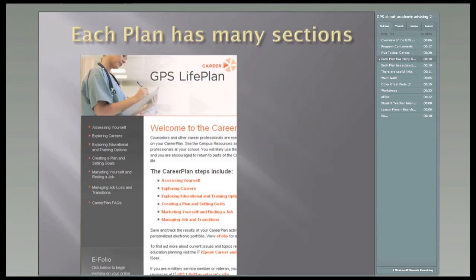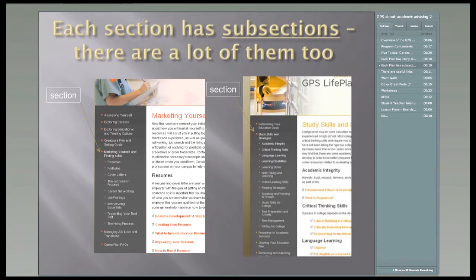Each of the GPS Life Plans is organized so users can click to easily open a section to find additional information on a particular topic. There are a lot of sections to explore, and because there is so much information, many sections have subsections. This makes it easy for users to find information they can use and find it quickly.